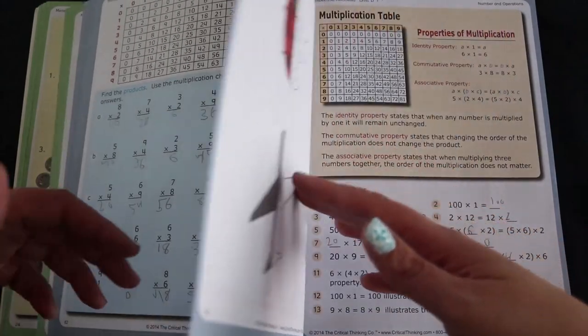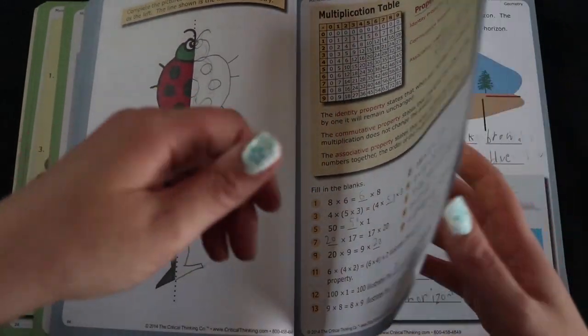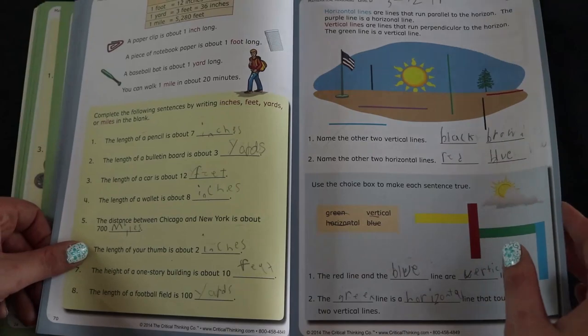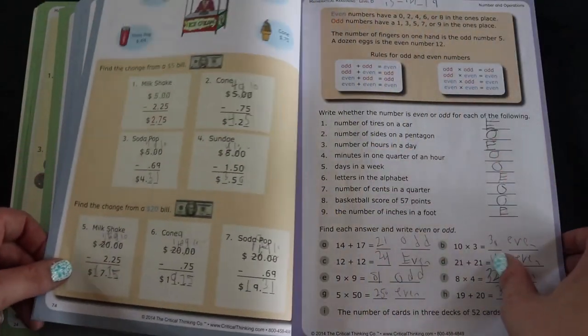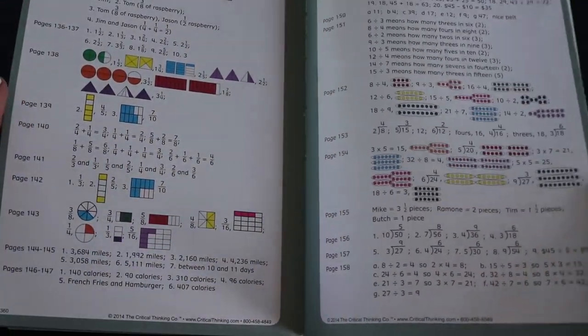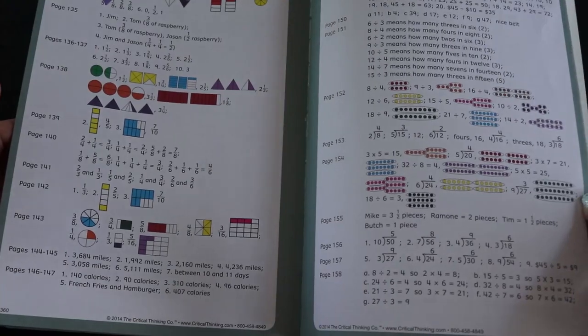My daughter works in this independently. And when she's done, I'll just look it over and make sure she's understood what she was working on. The back has full answer key. If you don't want to sit there and correct everything yourself. So this is pretty helpful for me to save time.